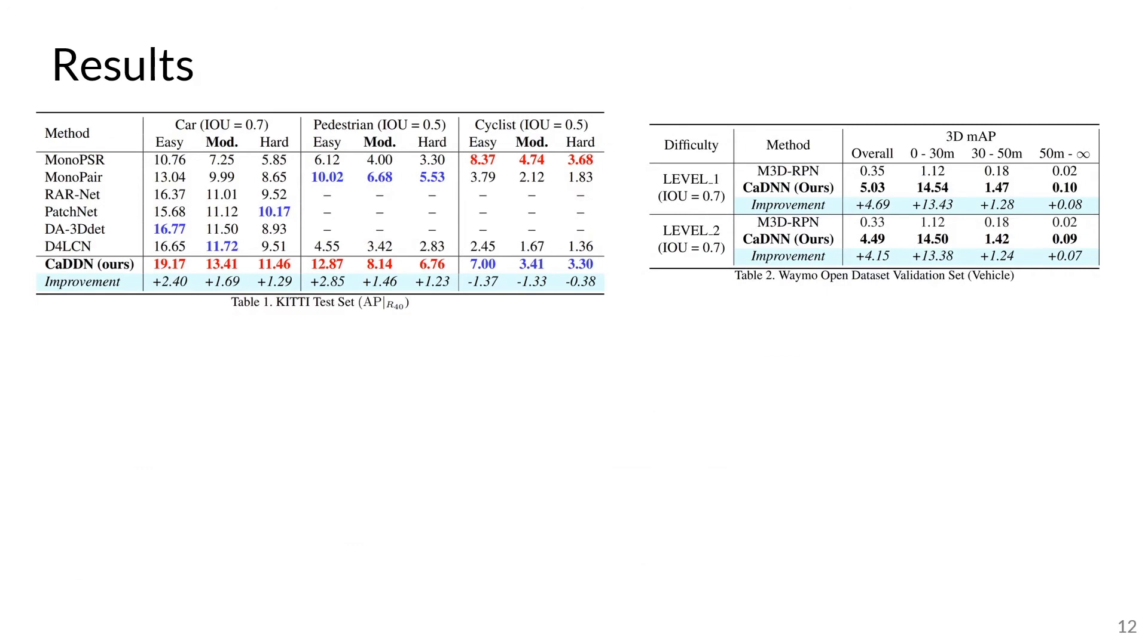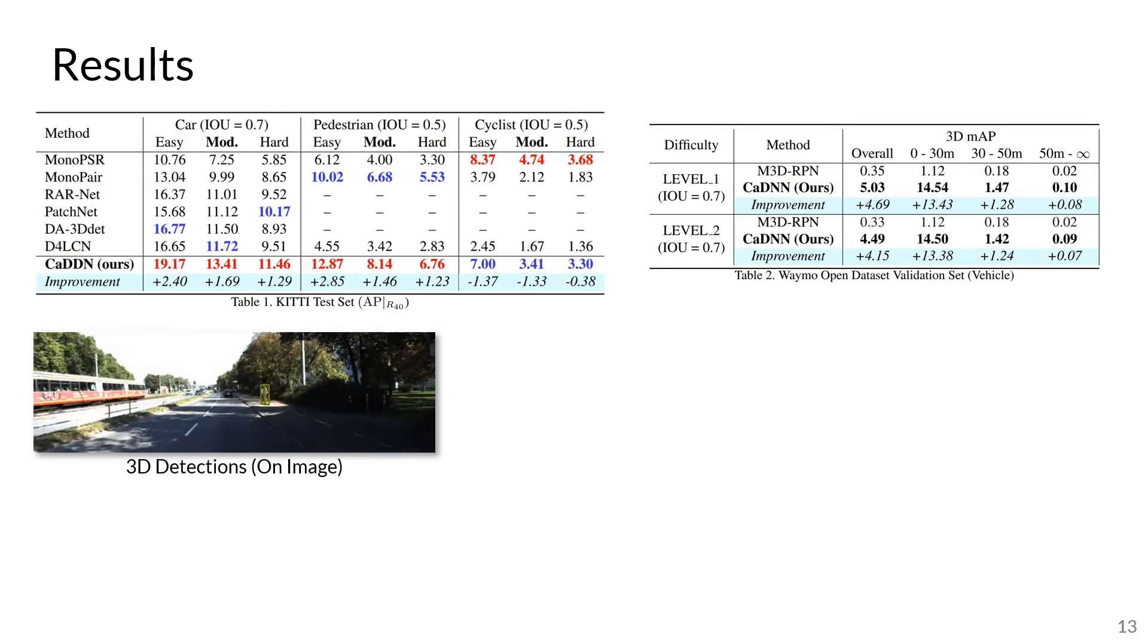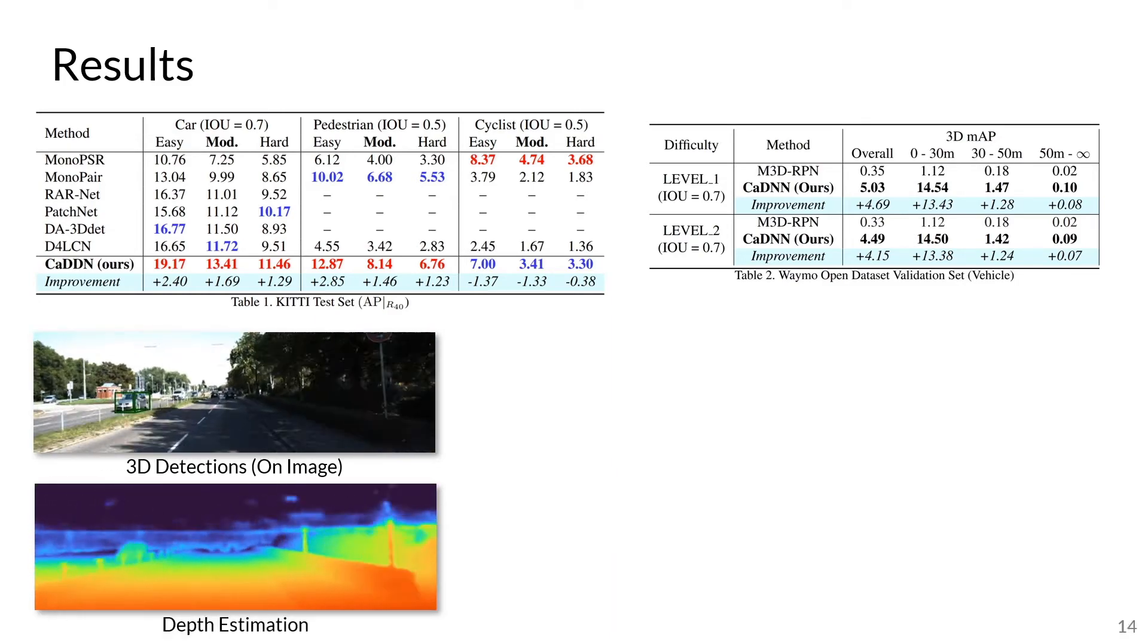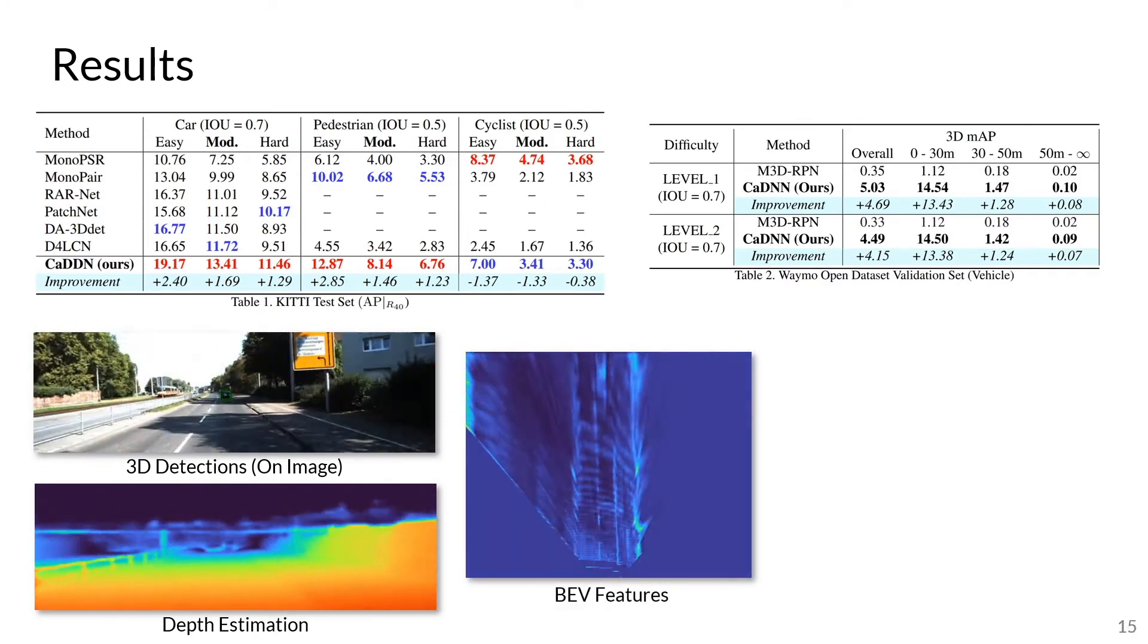CADIN achieves state-of-the-art performance on both the KITTI and Waymo datasets. From the input image, we can visualize our depth estimation results, where brighter colors indicate closer depths. We also visualize our bird's eye view features, in which objects can be distinctly located.